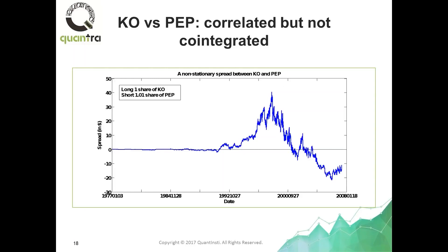For example, Coca-Cola and Pepsi have a fairly high, statistically significant daily returns correlation coefficient of 0.48. They move up and down at the same time about half the time — very significant. But interestingly, they don't co-integrate over a long period.